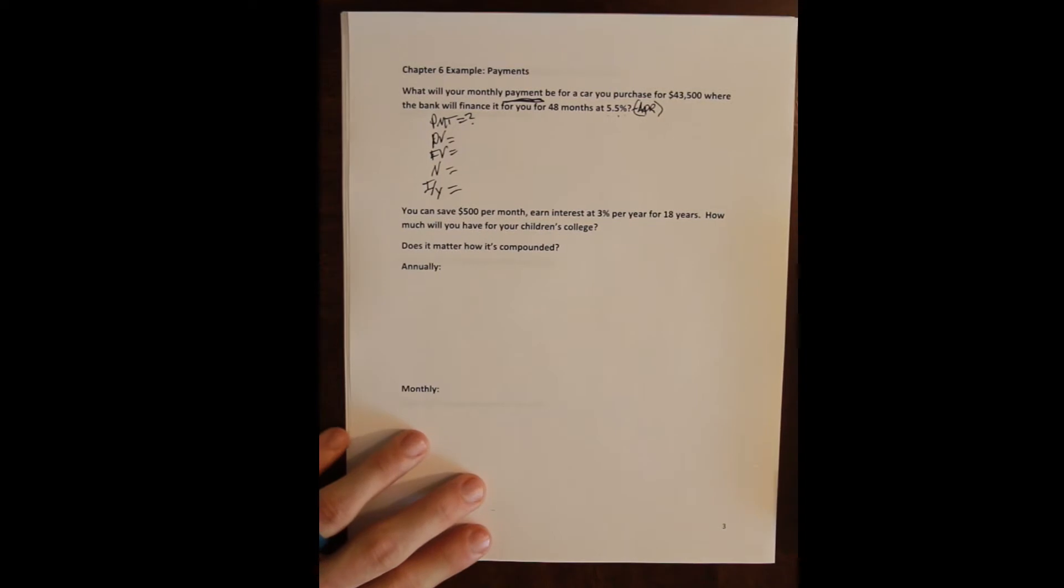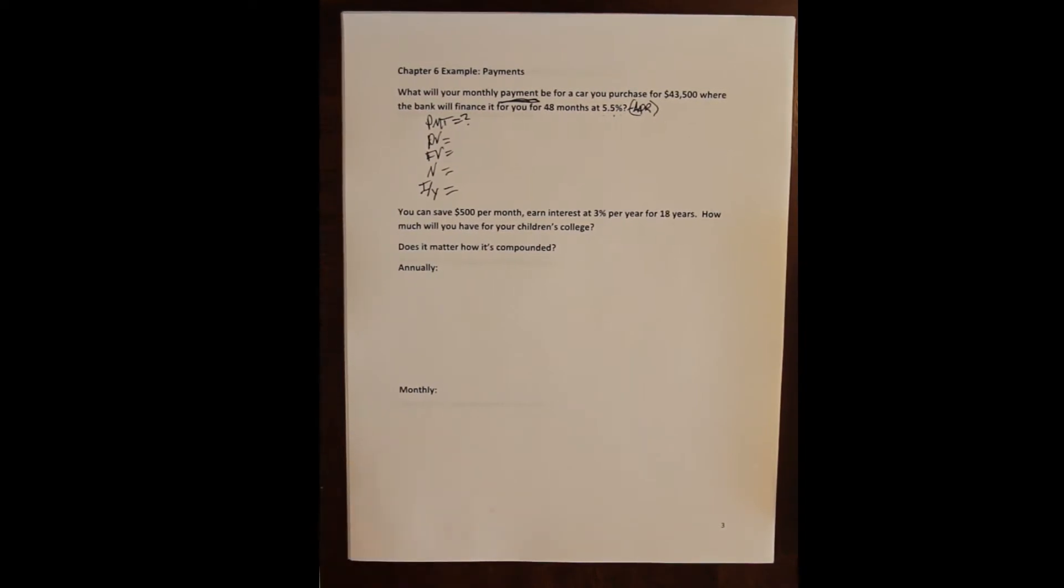So when we're doing these problems in order to make sure that we get the cash inflow and outflow correct, we have to ask ourselves what the story of the problem is. And the story of the problem is that we buy a car. But that's not the right story to solve the problem. The right story is that somebody loans us money and we have to pay it back.